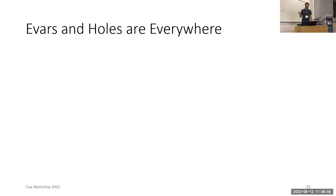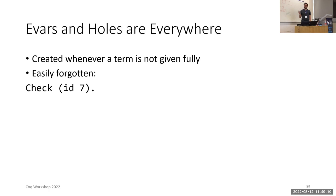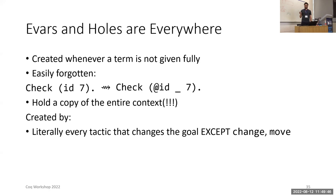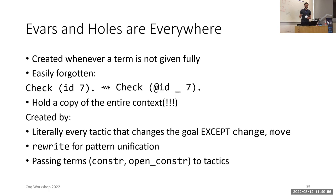Existential variables, as I've started to say a couple of times, are another one of the pervasive proof engine building blocks that show up often as performance bottlenecks. They are everywhere. They are created whenever a term is not given fully, and they are easily forgotten. For example, if you apply the identity function to 7, there is an e-bar hiding there, because you have not told Coq the type of 7. And they hold a copy of the entire context. This turns many operations that should be constant into being linear in the size of the context. They are created by literally every tactic that changes the goal, except for change and move, because Coq represents the goal as an e-bar.